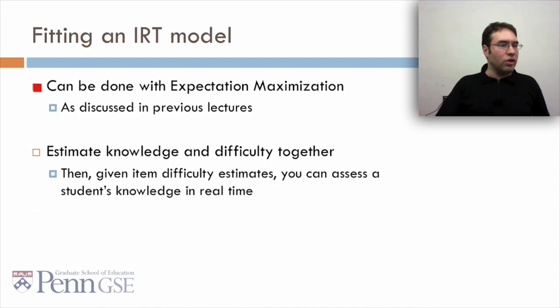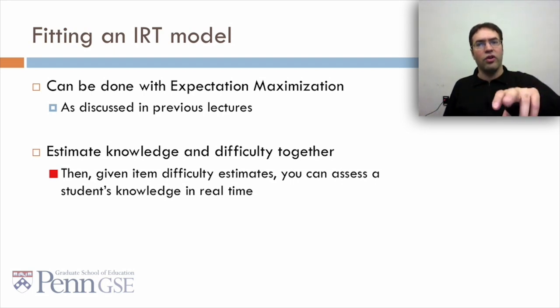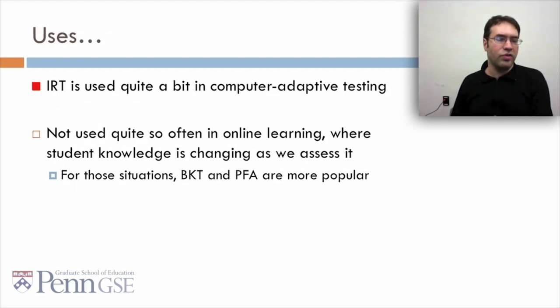Now how do you fit an IRT model? You can do this with expectation maximization as we discussed in the previous lecture. You estimate knowledge and difficulty together, and then once you've done this, given an item difficulty estimate, you can take a new student and assess their knowledge in real time.